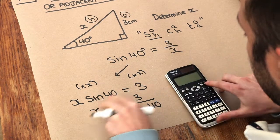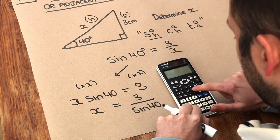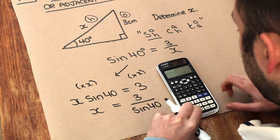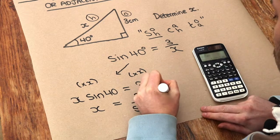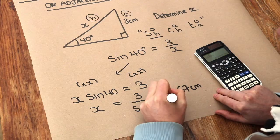And we just need to put that into our calculator, so fraction, 3 over sine of 40, making sure you close the bracket, and we get 4.67 centimetres to 3 significant figures.